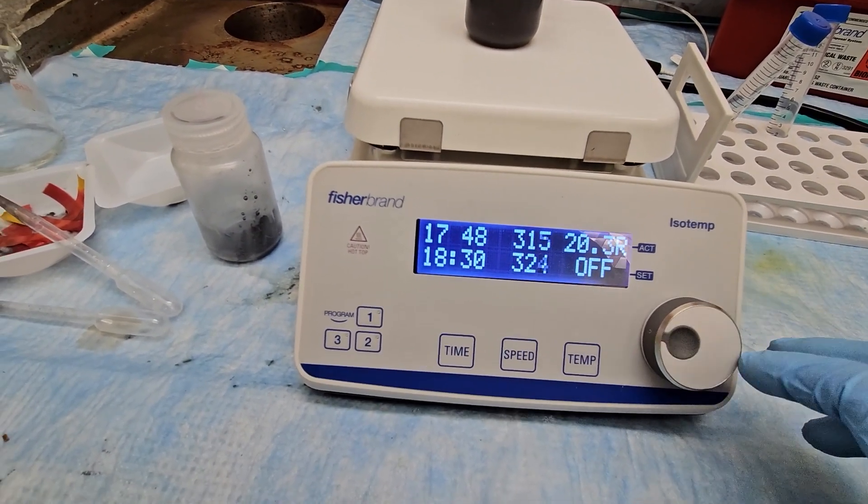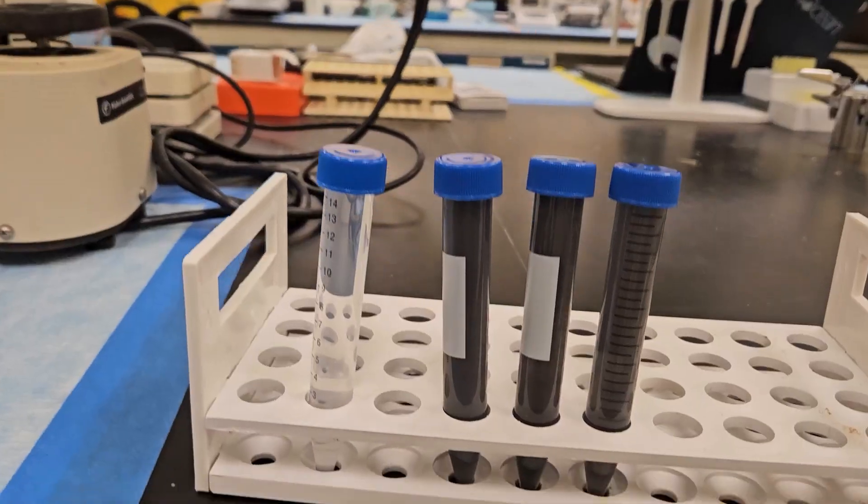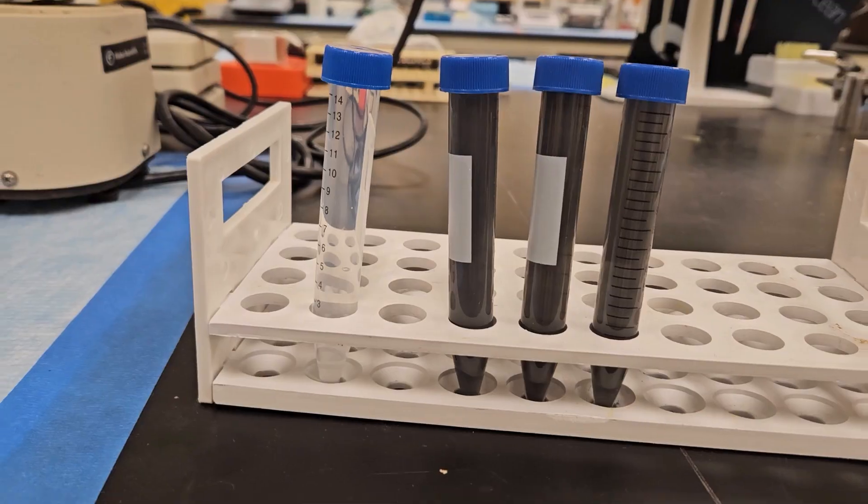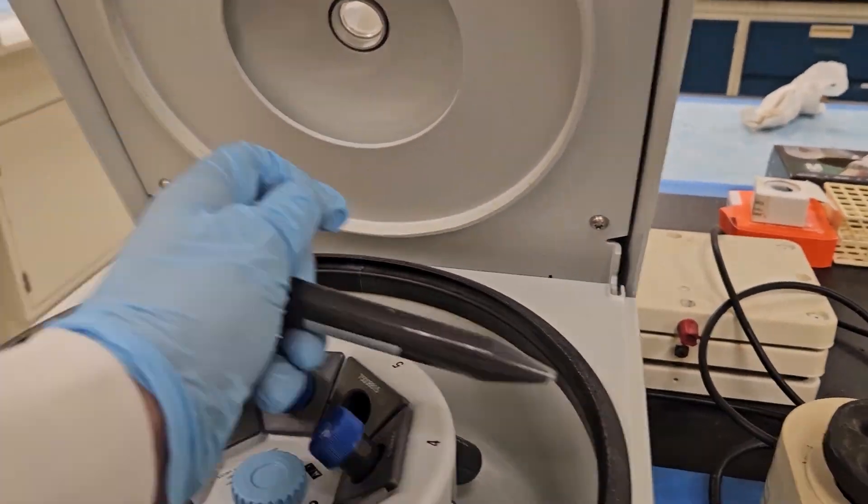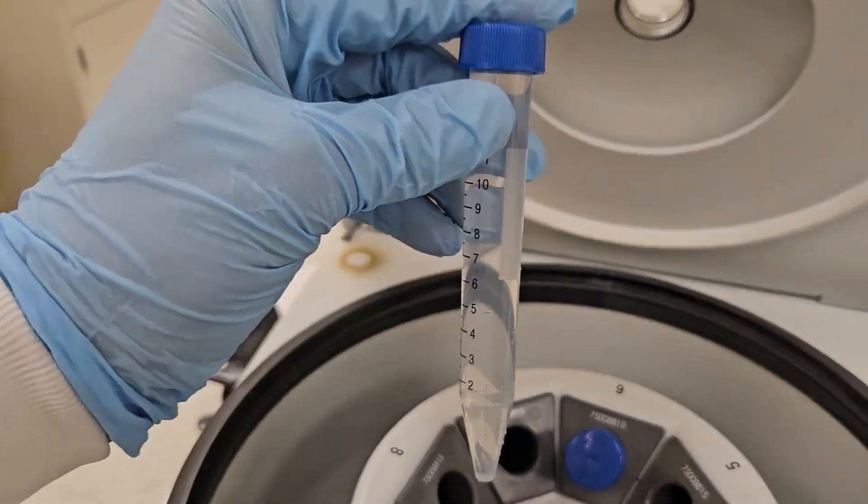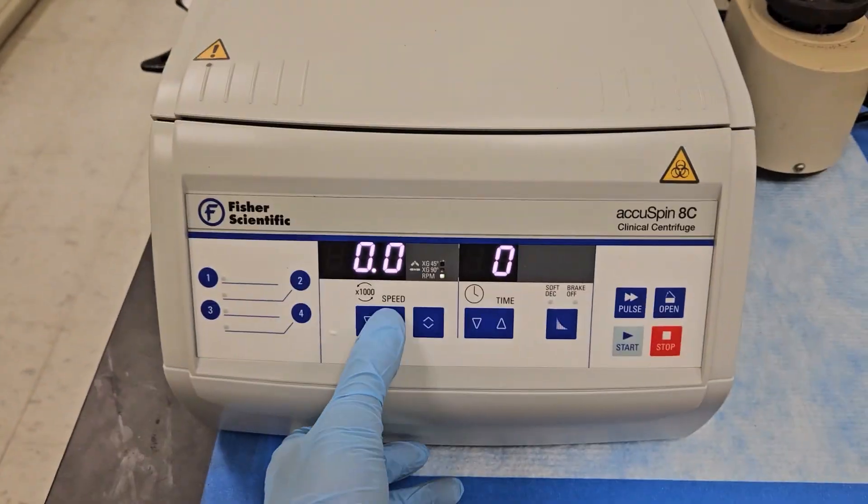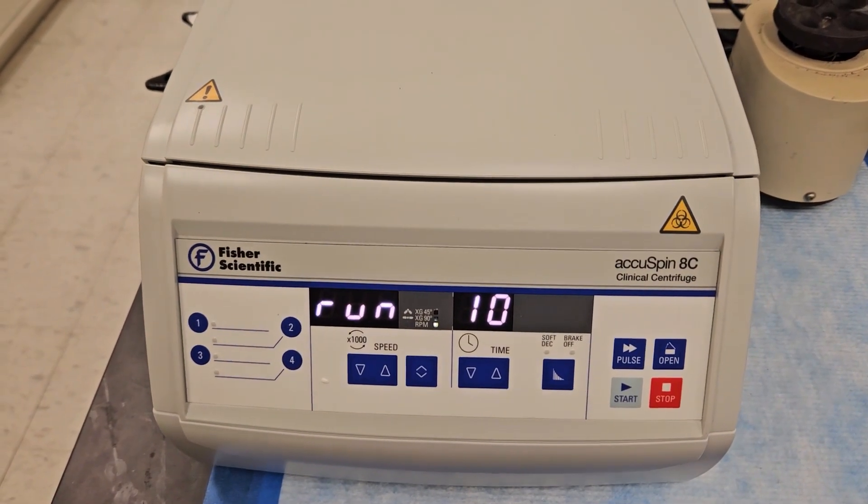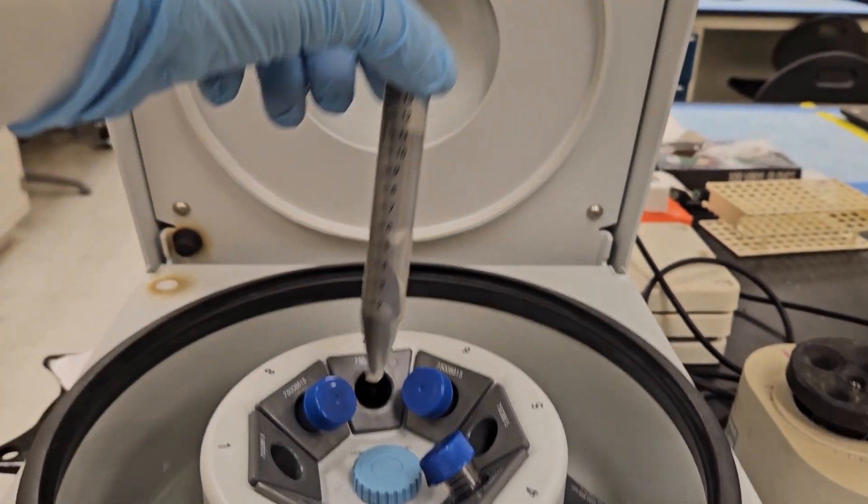We will then repeat a step similar to washing, where we transfer the solution into centrifuge tubes, and spin at 250 g for approximately 15 minutes, and repeat the process of decanting the clear supernatant. We will do this approximately three to four times, until we receive a supernatant that has a cloudy dispersion in it, as you can see here.